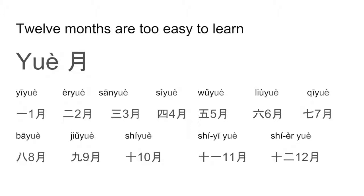Chinese people are very efficient with numbers — you don't have to waste any energy. After you have learned all the numbers, to talk about 12 months, you only need to learn one more word. Yue means month. So for the first month of the year, you add one in front of yue — yi yue. Second month — er yue. Third month — san yue. Until you reach the 12th month — shi er yue. You don't have to learn 12 different words for 12 months; you learn 12 numbers plus yue.